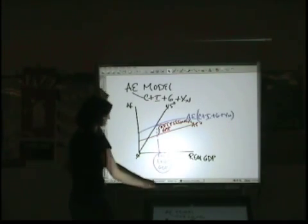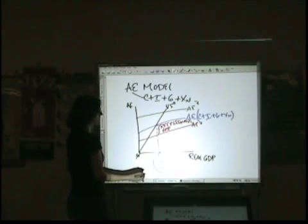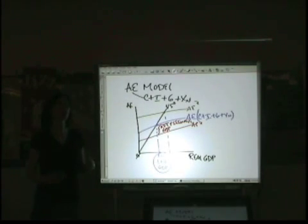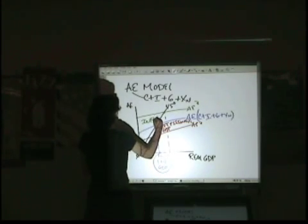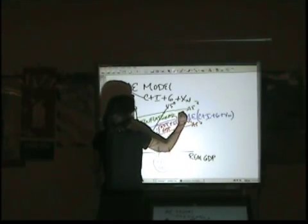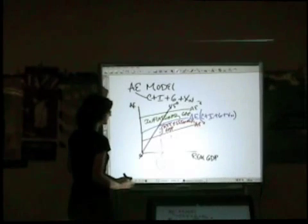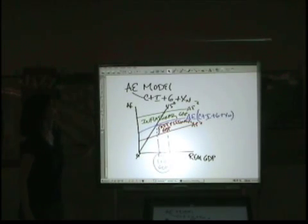What happens if it's too high — so that now we're pushing beyond the full employment GDP? At that point, we're probably over-utilizing our resources, paying our workers more than is justifiable based on how productive they are. We're driving prices up without really getting any more output. So what's going to happen is the inflationary gap. With the recessionary gap we're too low; with the inflationary gap we're too high. You would want to adjust with government policies to bring those things back into line.